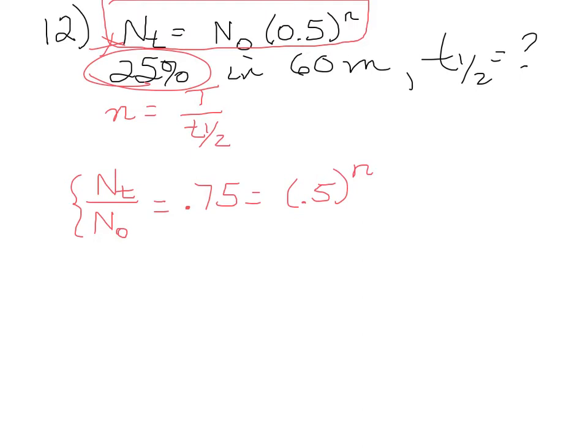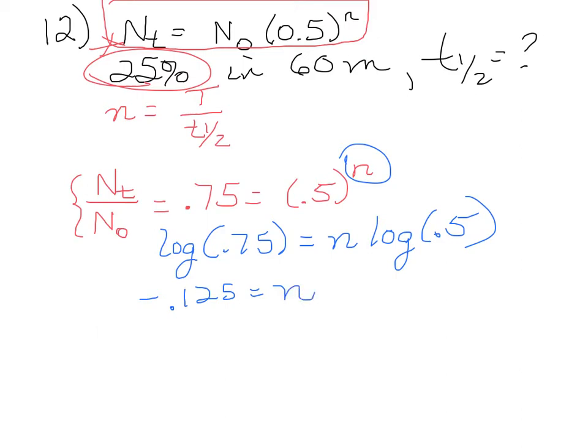So to solve, to figure out what N is, we take the log of both sides. So now we have log of 0.75 equals N times log of 0.5. The log of 0.75 is minus 0.125, and the log of 0.5 is minus 0.301.